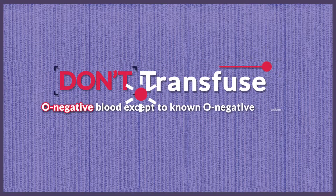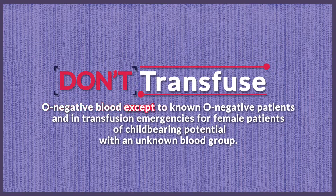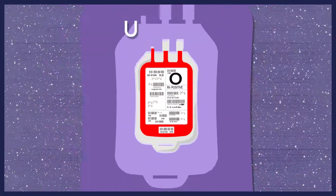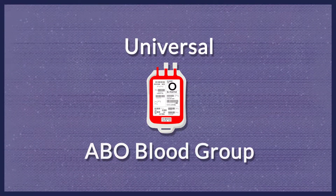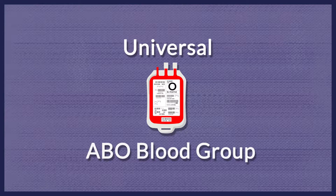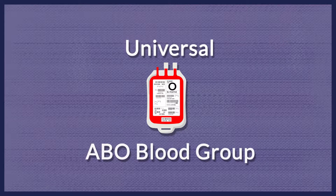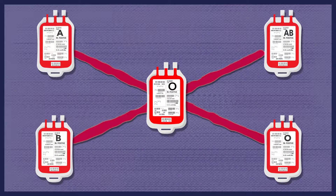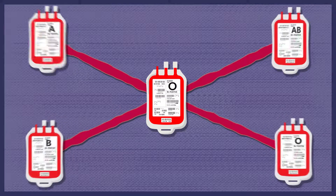Don't transfuse O negative blood except to known O negative patients and in transfusion emergencies for female patients of child-bearing potential with an unknown blood group. Group O is the universal donor ABO blood group, and patients of any blood group can safely receive Group O red blood cells.